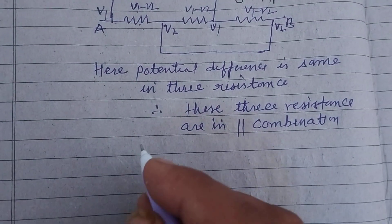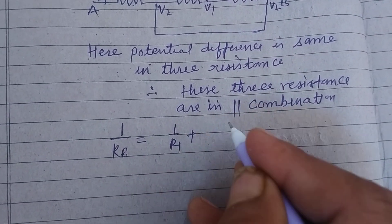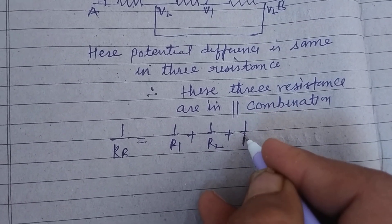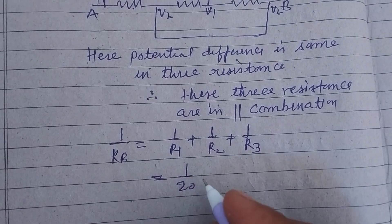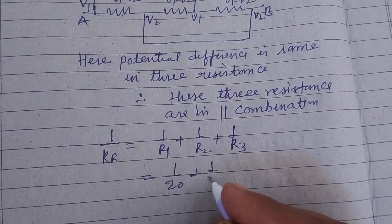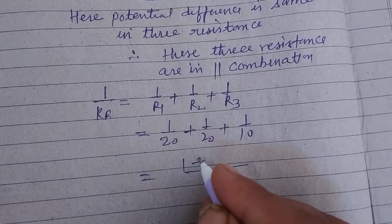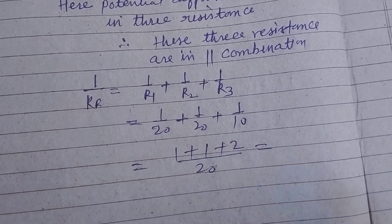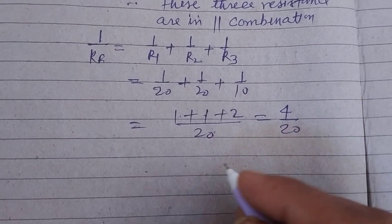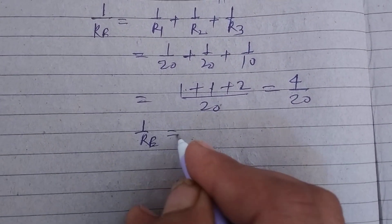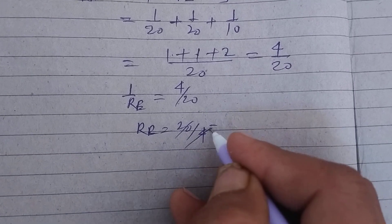So here, the equivalent resistance R_equivalent equals 1/R1 plus 1/R2 plus 1/R3 in parallel combination. So this is 1/20 ohm plus 1/20 ohm plus 1/10 ohm. The LCM is 20. So 1/R_equivalent equals 4/20, or R_equivalent equals 20/4, which is 5 ohms.